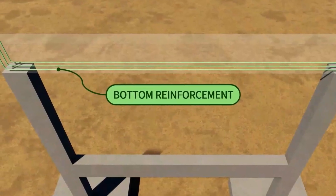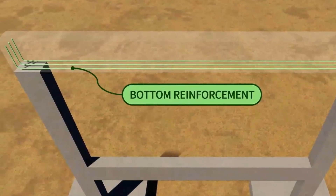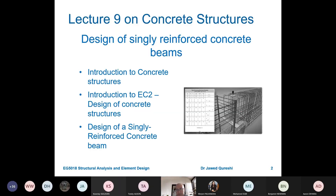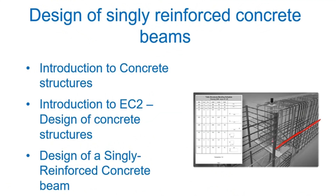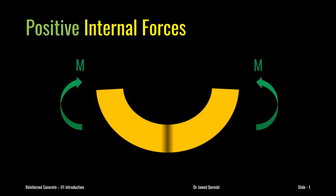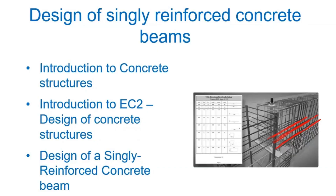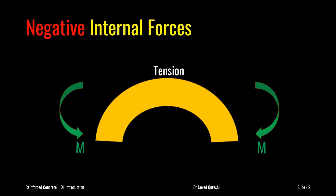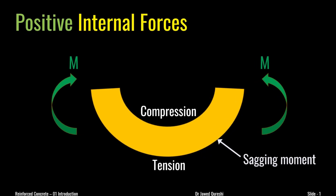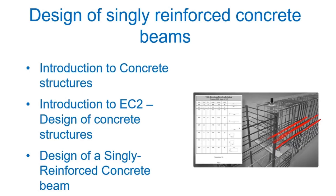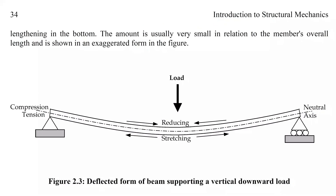I will be mainly focused on the design of a singly reinforced concrete beam. Any concrete beam will have a cage with bottom bars — these are tension bars. Whenever we apply loading on a simply supported beam, the bottom is always going to be in tension and the top in compression. If you imagine a ruler on your two fingers and apply a uniformly distributed load or a point load, the beam is going to deflect downward.